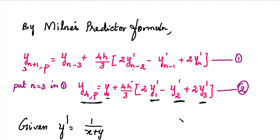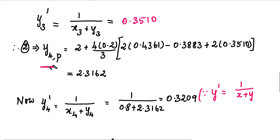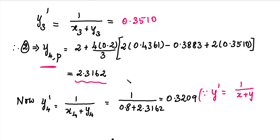We substitute all values into the predictor formula equation. Now we simplify this value. The predictor answer is y4 equals 2.3162. We will next substitute the value for y4-corrector using the corrector formula to find y4-dash.